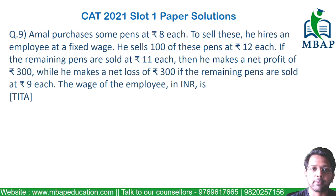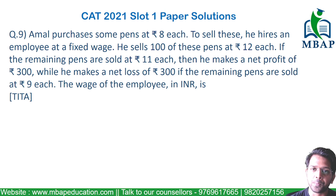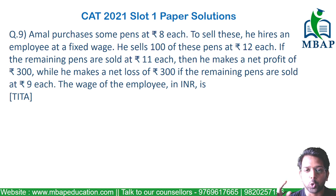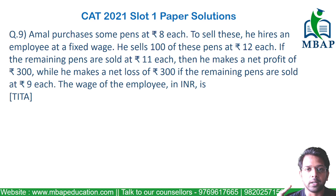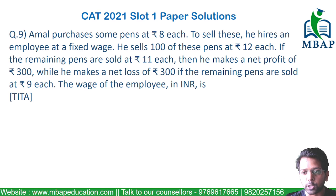So when you sell the remaining pens at Rs.11, there is a profit of Rs.300. If you sell the remaining pens at Rs.9, there is a loss of Rs.300. The question is: what is the wage of the employee? To find the wage, you calculate the total number of pens purchased and sold, find the cost price and selling price, and then removing the wage gives you either the profit or the loss.